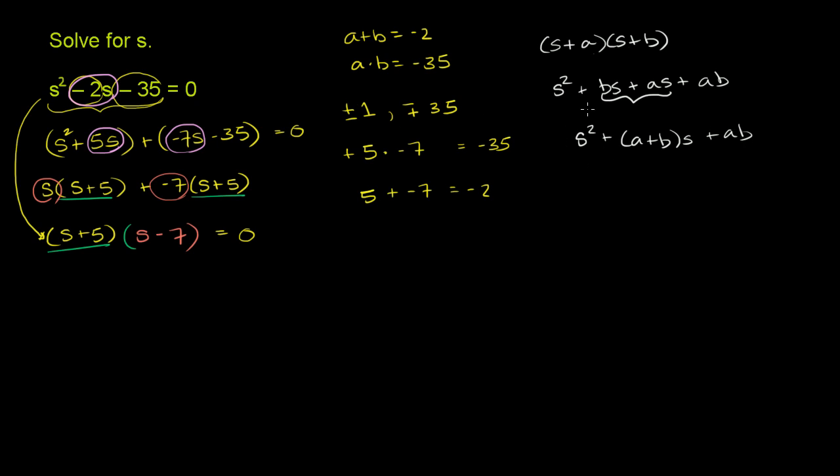So we could say, hey, if we know those two numbers, if a is equal to 5 and b is equal to negative 7, then this just becomes s plus 5 times s plus negative 7, or s minus 7. So that's kind of the faster way to do it. But it never hurts to see that we can really just kind of unpackage this negative 2s and do it by grouping.